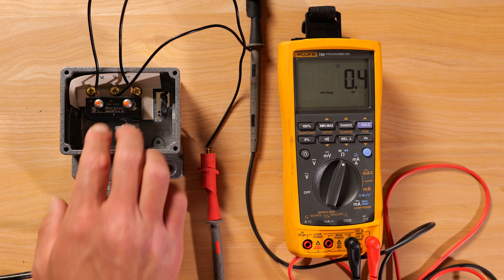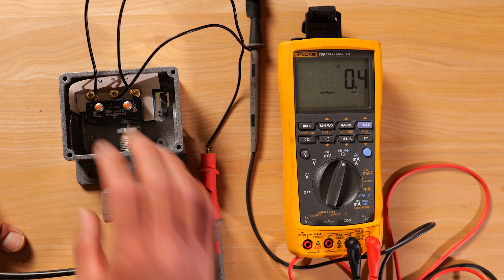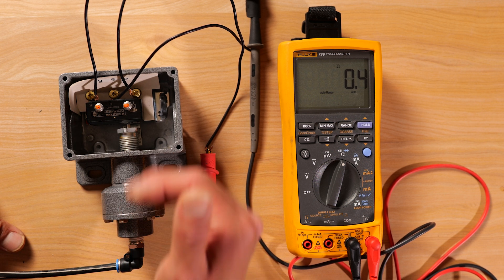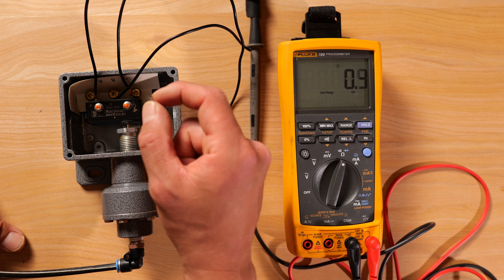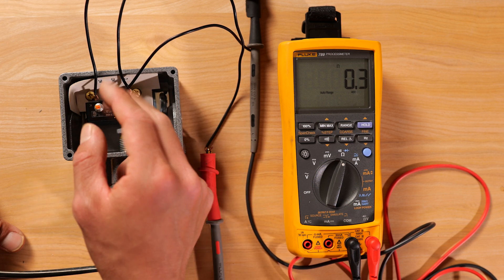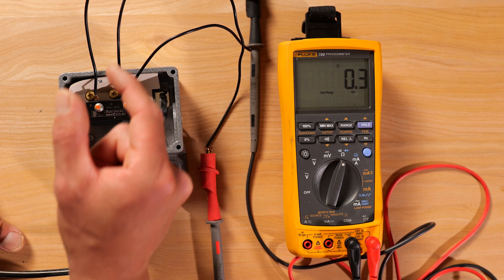This micro switch is what's doing the magic here, right? So with process pressure applied, the micro switch then changes states and now allows a different electrical path to flow through.